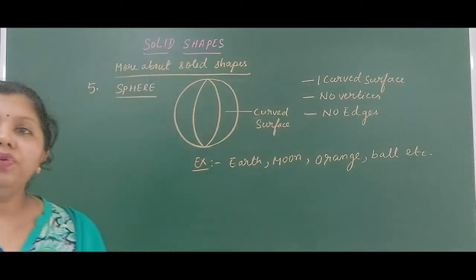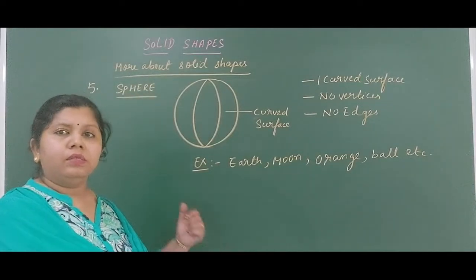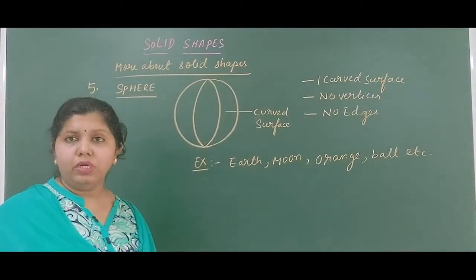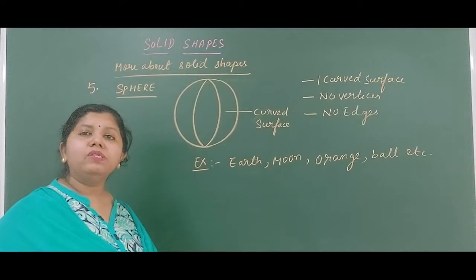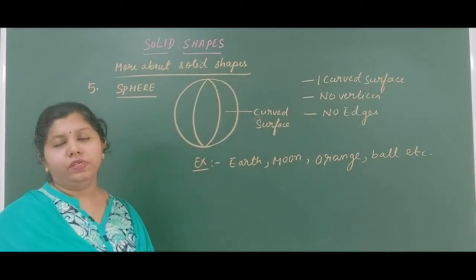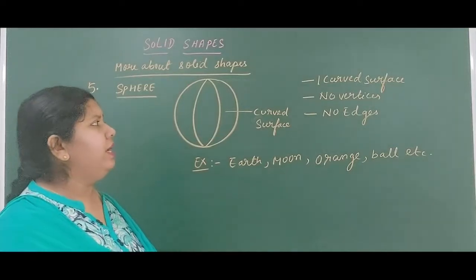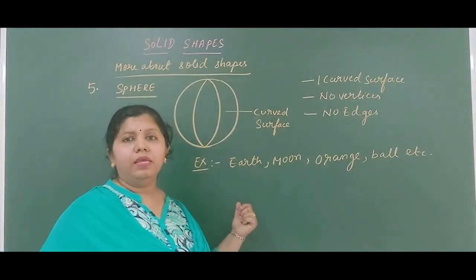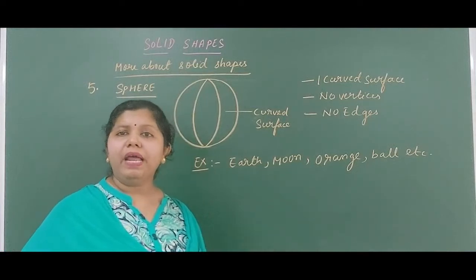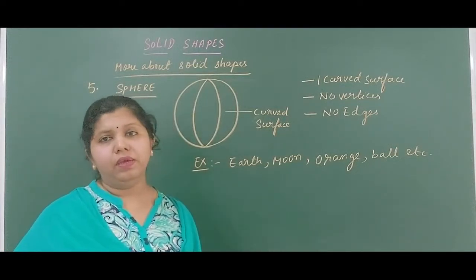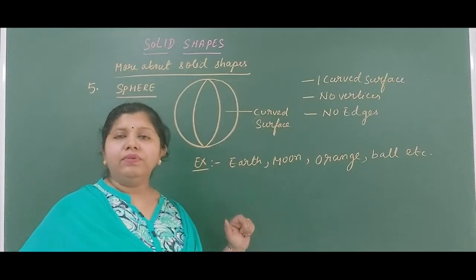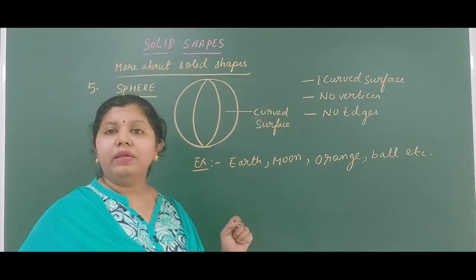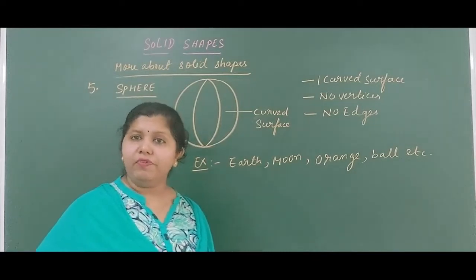The last common figure we are going to learn is the sphere. This is one of the most important solid shapes because it has only a curved surface. It does not have any vertices or edges. Examples of a sphere are a ball, any planet, or round fruits like oranges and apples — these all show a spherical shape.